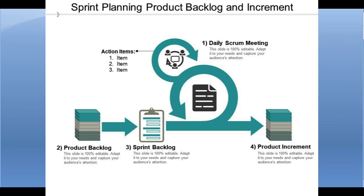For the first sprint, we have a target that the customer can login into the e-commerce solution. Once the sprint is completed, we have a working software application in which the customer can login. Then when the second sprint ends, we have functionality where the customer can login and also see the product catalog. So with each sprint, functionality is added — which is basically called the product increment.